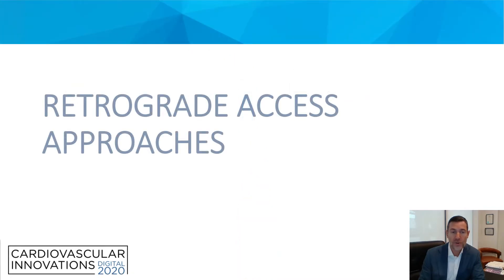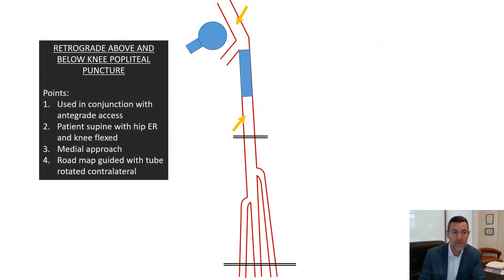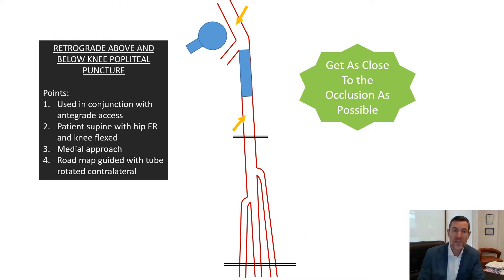Let's go through a couple of retrograde access approaches. The first is for a proximal SFA CTO, used in conjunction with an antegrade access — usually ipsilateral downhill. The patient is positioned supine with the hip externally rotated and the knee slightly flexed. An antegrade approach is taken to the above-knee popliteal puncture, done with roadmap guidance or ultrasound depending on preference. The goal is to get as close to the CTO as possible to give the best pushability.